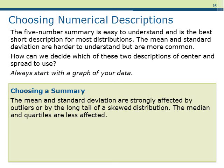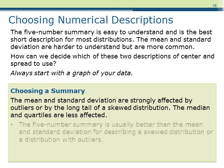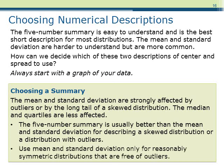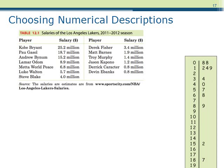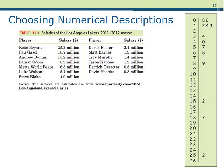So which provides a better summary — the mean and standard deviation, or the five-number summary? In general, the five-number summary is better if the distribution is skewed and has outliers. The mean and standard deviation are typically used if the distribution is symmetric and free of outliers. If you are unsure whether a distribution is skewed or has outliers, always start with a graph to get a sense. For instance, if we look at a stem plot and see that the data is skewed to the right and has outliers, then the five-number summary would most likely give a better representation.